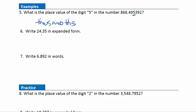Example six: write 24.35 in expanded form. We're going to write the value of each digit. The digit two has a value of twenty. The four is just four, because it's in the ones place. The three is in the tenths place, so that's the fraction three-tenths. And the last digit five is in the hundredths place, so that's the fraction five over a hundred. When we write in expanded form, we don't need to simplify these fractions.